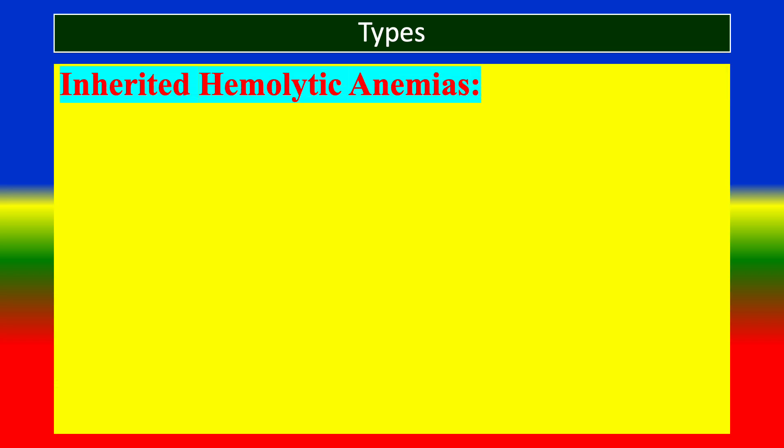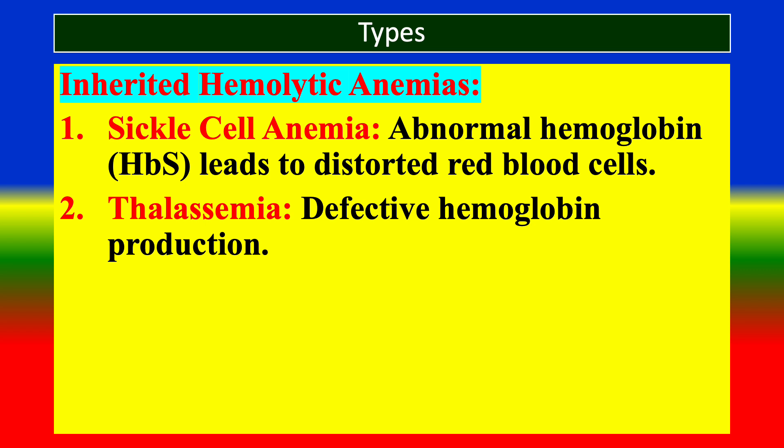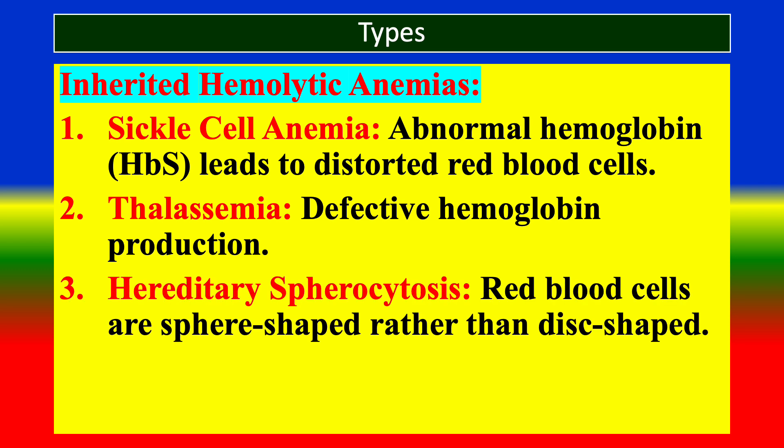Types — Inherited hemolytic anemia: (1) Sickle cell anemia — abnormal hemoglobin leads to distorted red blood cells. (2) Thalassemia — defective hemoglobin production. (3) Hereditary spherocytosis — red blood cells are sphere-shaped rather than disc-shaped.